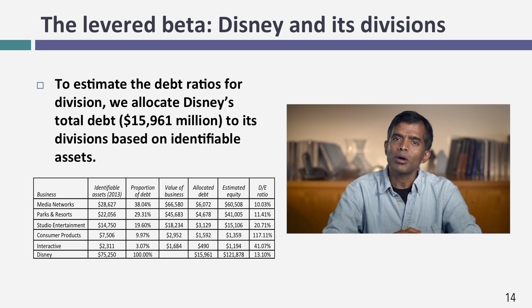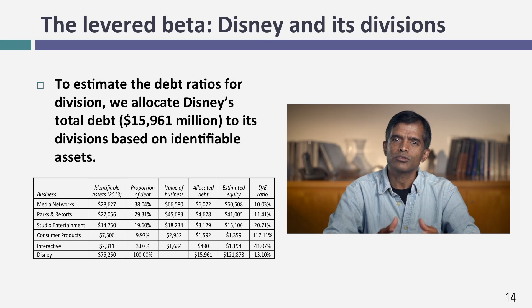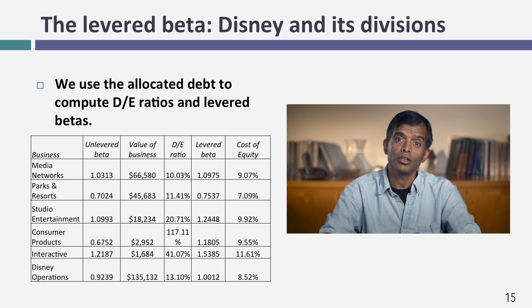The final step is I need a levered beta, and here I ran into an issue. I need a debt-to-equity ratio by business, but Disney does not borrow by business — it borrows as a company, with about $15.96 billion in debt. Rather than assume every business has the same debt-to-equity ratio, I allocated Disney's debt across its businesses based on their identifiable assets. That gives different debt-to-equity ratios for each business, which I use to compute a levered beta for each of the five businesses — and you can see how different they are. The levered beta for Disney as a company is close to one, but much higher for some businesses and lower for others.